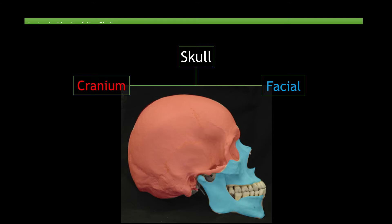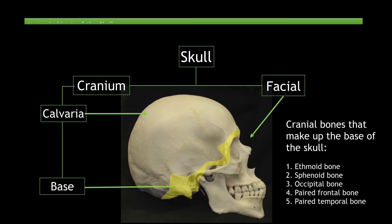The skull can be broken down into the cranium, which protects the brain, and the facial bones. Furthermore, the cranium can be divided into the calvaria, also known as the skull cap, and the base of the skull, which is made up of five cranial bones including the ethmoid, sphenoid, occipital, paired frontal, and paired temporal bones.